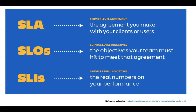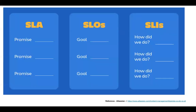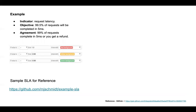To summarize: SLAs are the promises you make, SLOs are the goals or objectives you set within your team, and SLI is the actual result — how you actually did. For example, your SLA says 99% of requests complete in 5 milliseconds or you get a refund; your SLO internally is 99.5% of requests completed in 5 milliseconds; and the SLI is what actually happened.